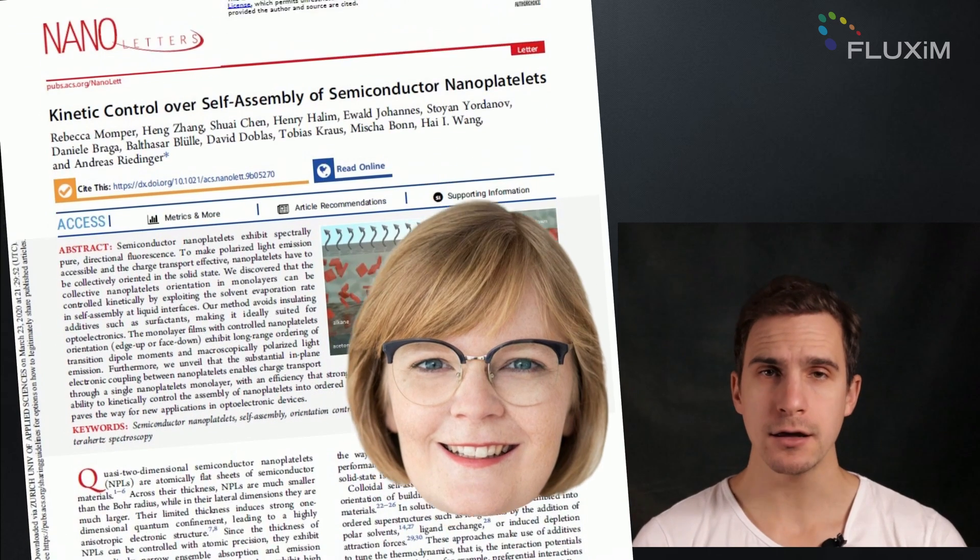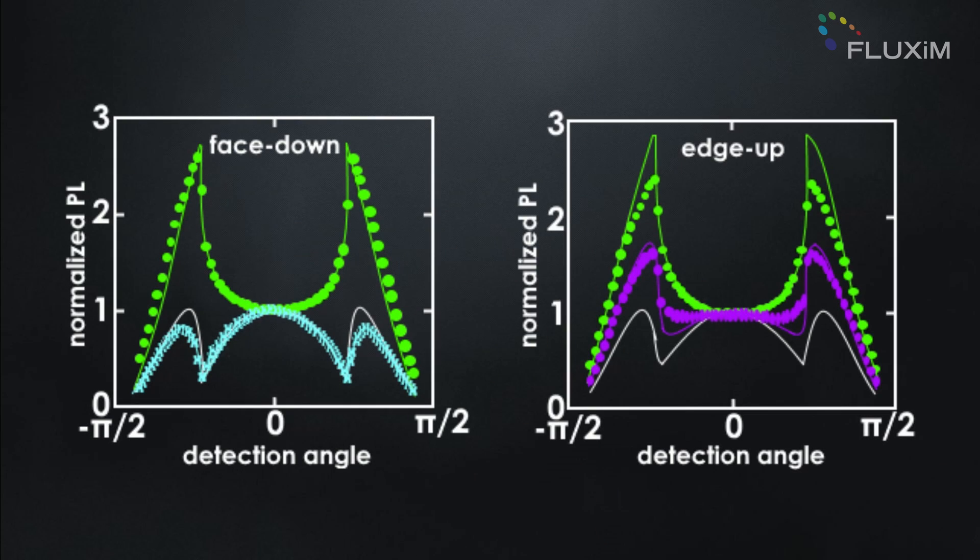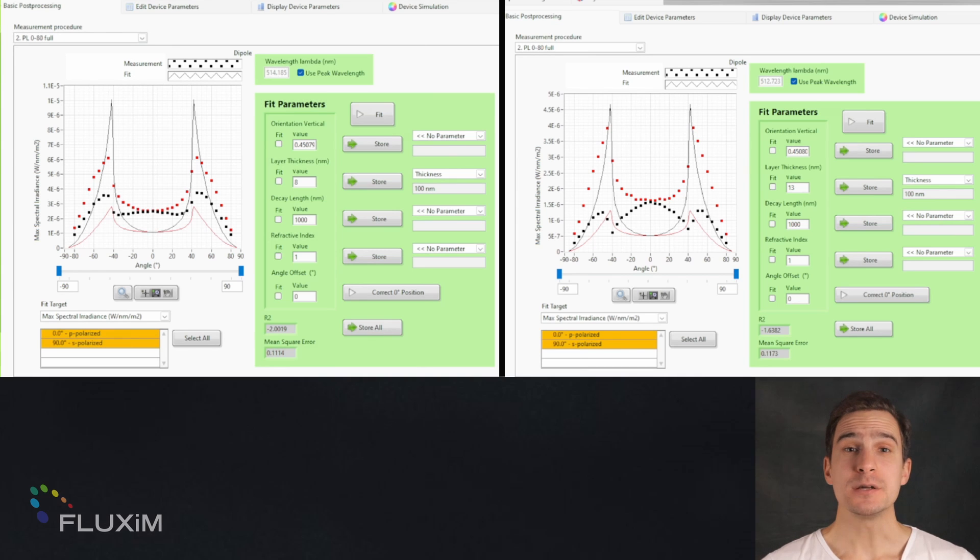Momper et al. carried out an angle-dependent PL measurement with Thelos on cadmium-selenide nanoplatelets to assess the influence of orientation on the intensity of light emission. Facedown platelets have a lower p-polarized light intensity than edge-up nanoplatelets. We can obtain this information with a simple post-processing of the angle-dependent PL with the software provided with Thelos.